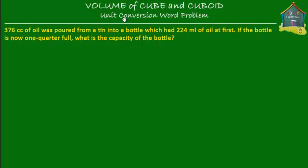Welcome to homecampus.com.sg. Let's solve this word problem on volume. It says that 376 cc of oil was poured from a tin into a bottle which had 224 milliliters of oil at first.